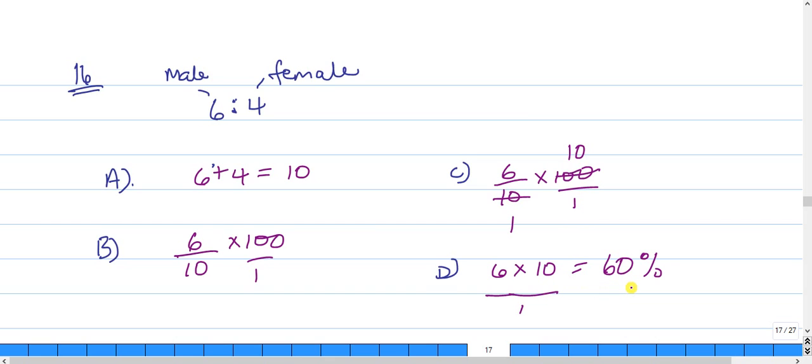Pay attention to the terms. Write the terms in the order they were given. They gave male first, being represented by 6, females being represented by 4. We add the terms to get the total number of shares.